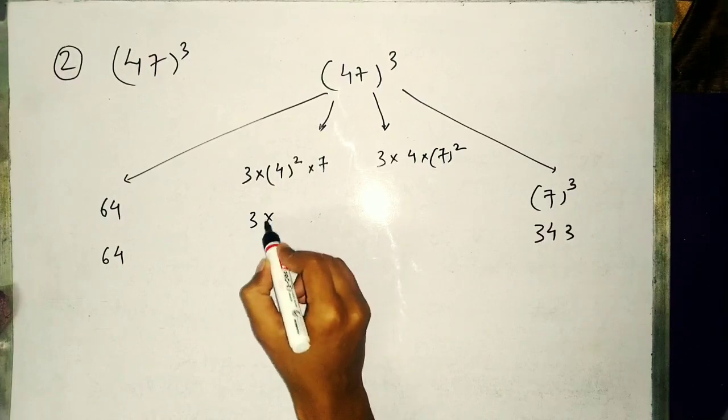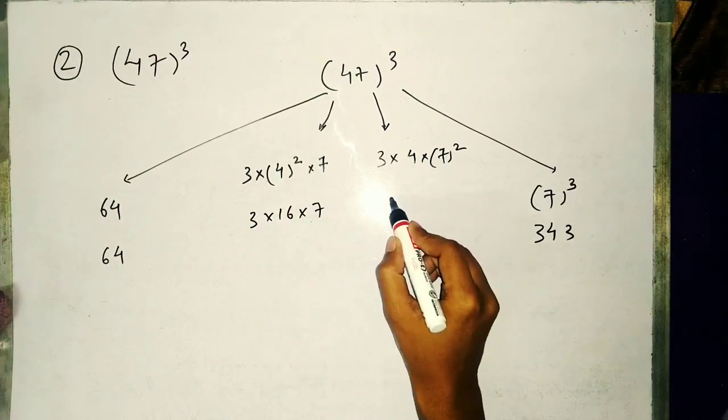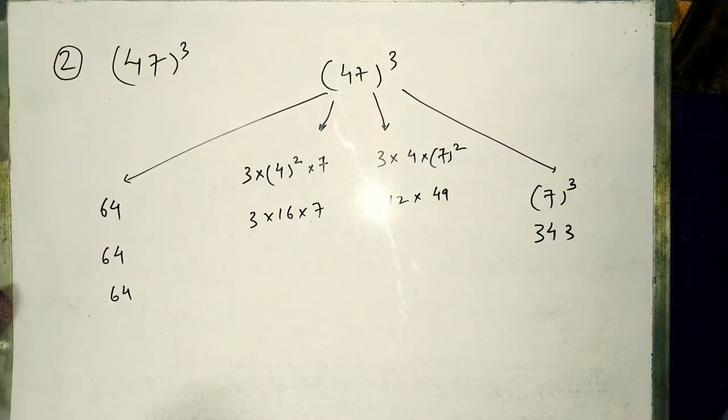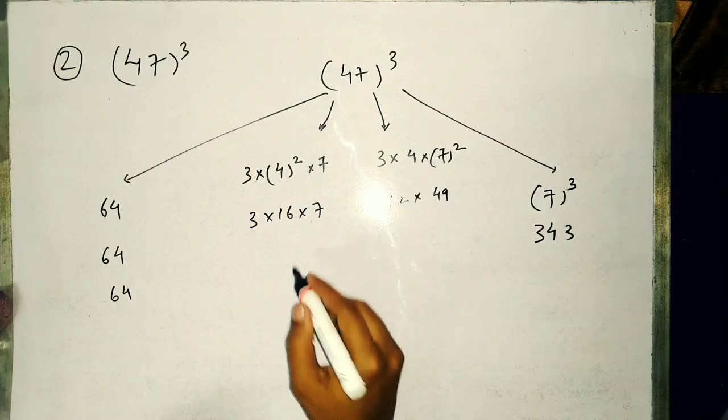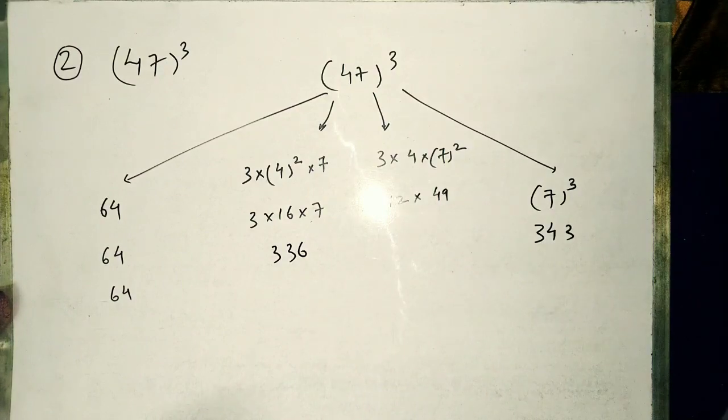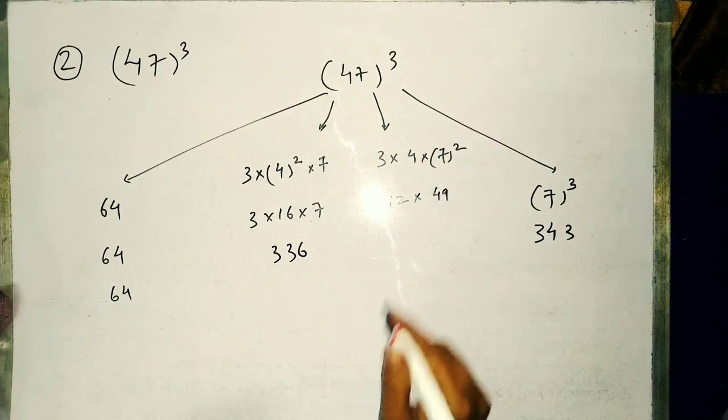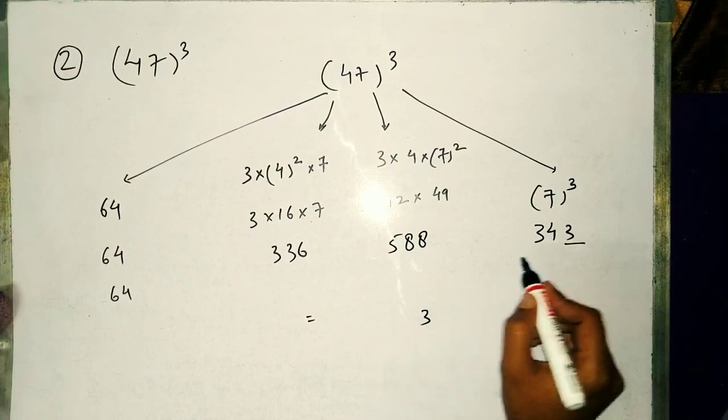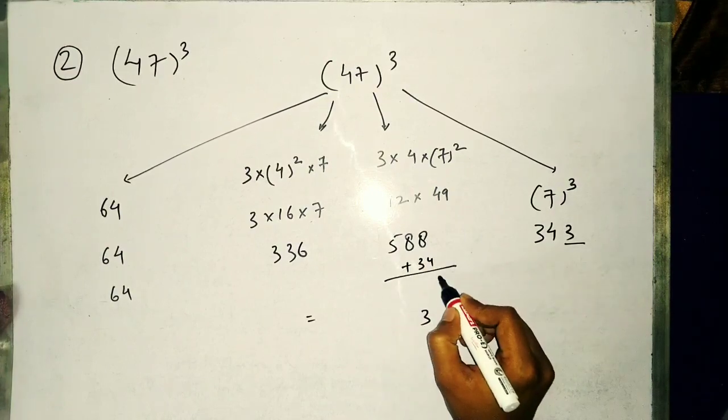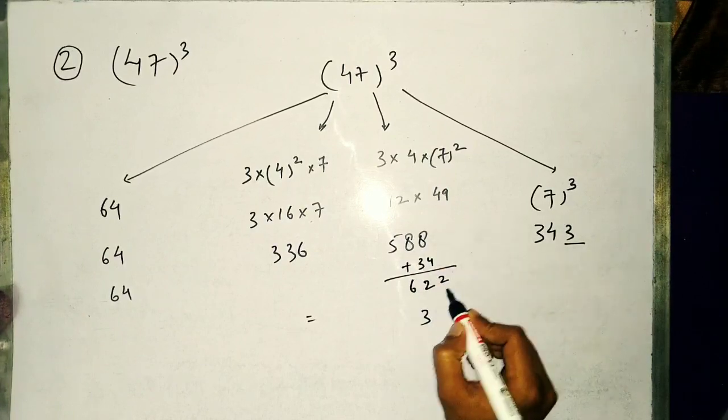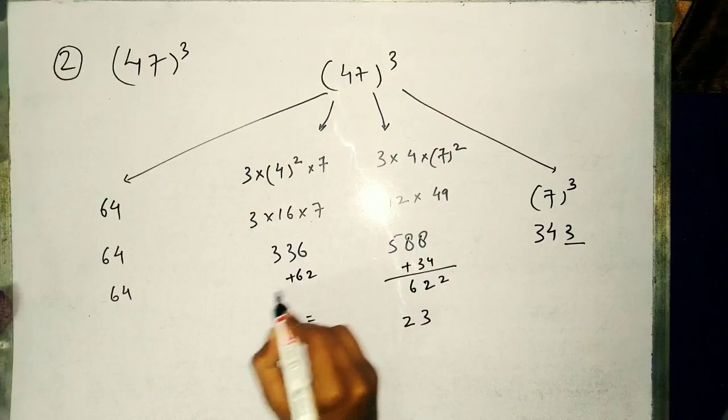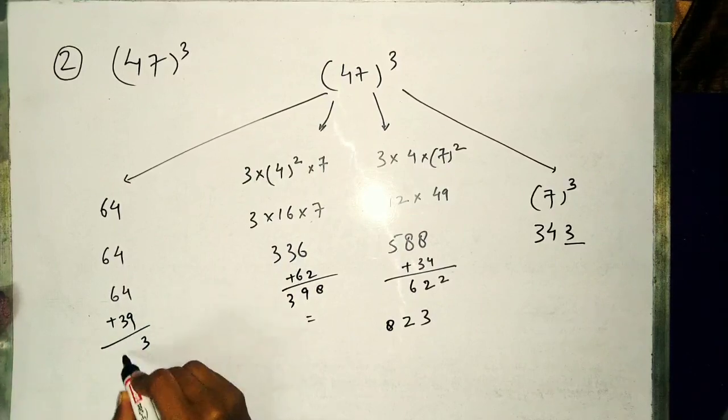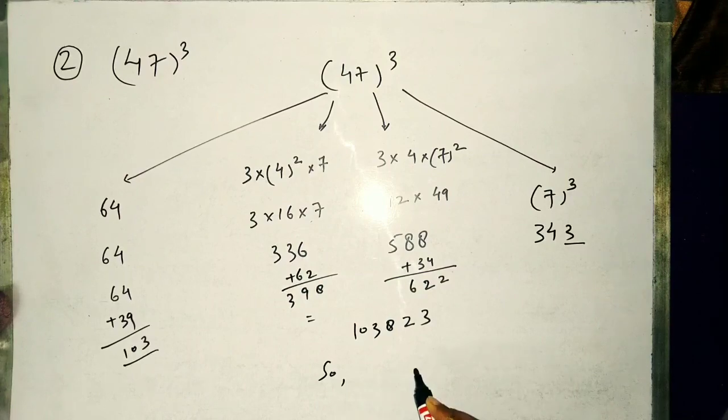We will write last digit 3, then 34 carry forward. Right 2, 62 carry forward 8. Right 8 carry forward 39. 103.